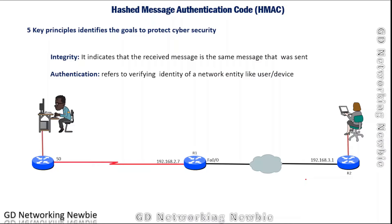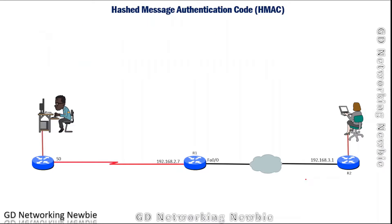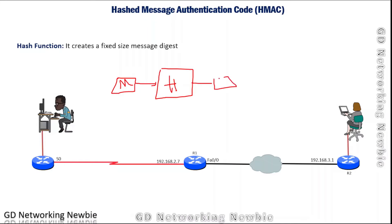For that we use a hash function. The hash function is like a magic box — we use our message as input, and that message can be any message such as an email or video. The hash function generates a hash value on the basis of that message. That hash value can also be known as a fingerprint, message fingerprint, or message digest — there are different names for it.